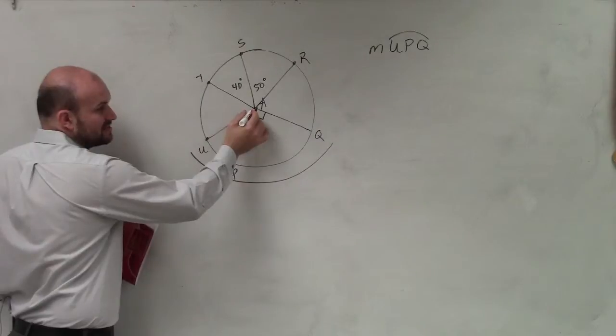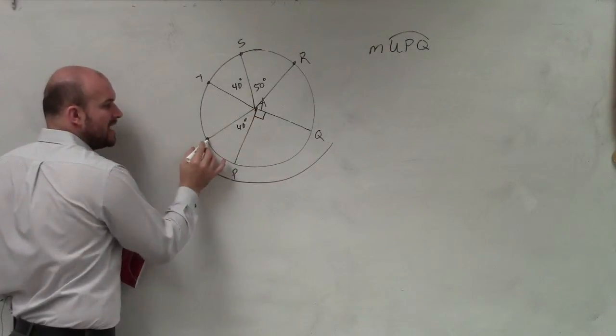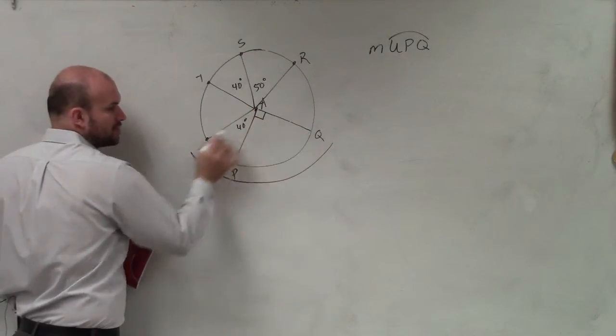You can see that we have a vertex at the center, which is a. And we have two endpoints, which are on the circle u and q.